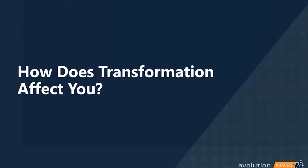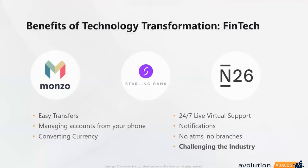How does transformation affect you? Before getting into the architectural content, it's worth looking at some recent scenarios. From a fintech background, there are aspects here that incorporate things like startup banks. Here in the UK we have things like Monzo and Starling Bank, and N26 is more popular across Europe — these are fintech companies that have come into the world to disrupt traditional banking models.